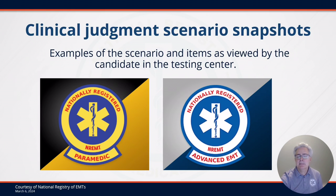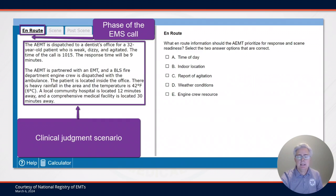Section 1 are examples of the scenarios and the items as viewed by the candidate at the Testing Center. What you see right now is an actual screenshot of what a candidate will see. On the left, you'll note there is the scenario information about the en route phase of this particular call. And on the right, you'll see the question associated with the en route information. At the Testing Center, the candidate will not see the purple boxes, the purple lines, or the purple font.